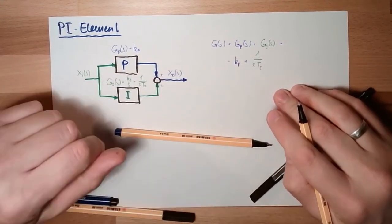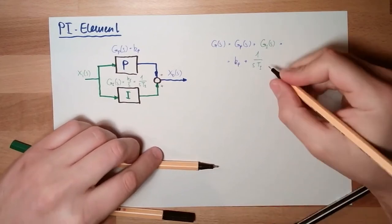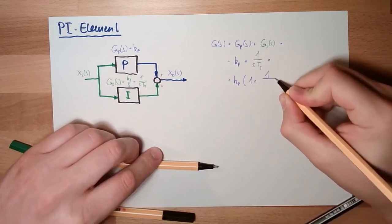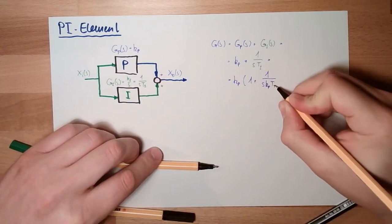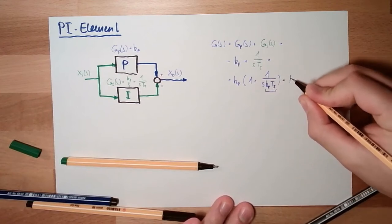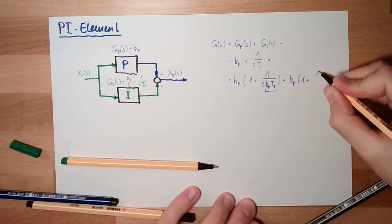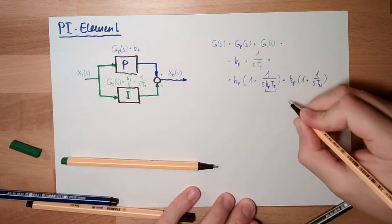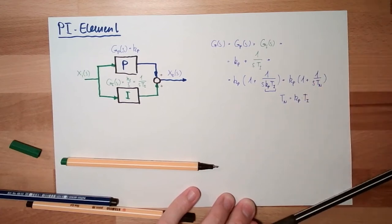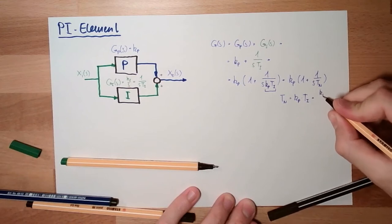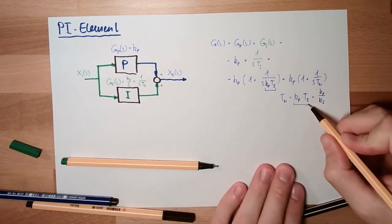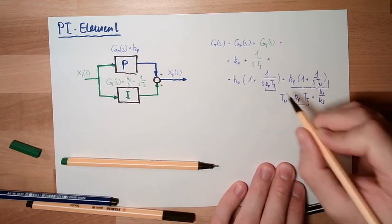But we can even do the following: we can say kp times the quantity 1 plus 1 divided by s·tn, where tn is kp multiplied by ti, or kp divided by ki. This is more common. This is the second representation.